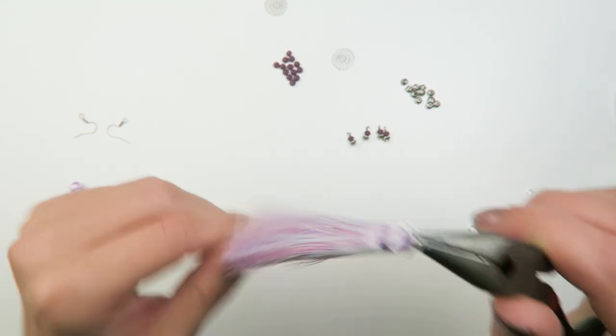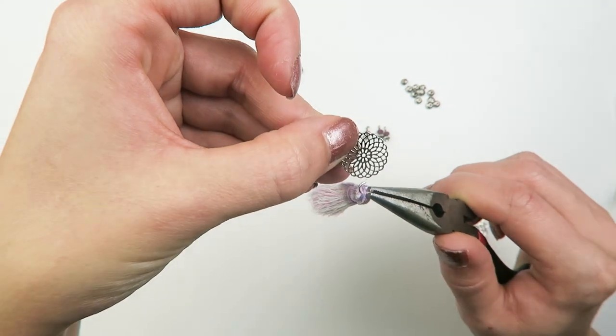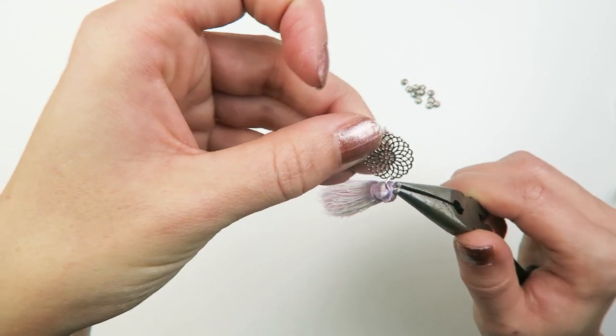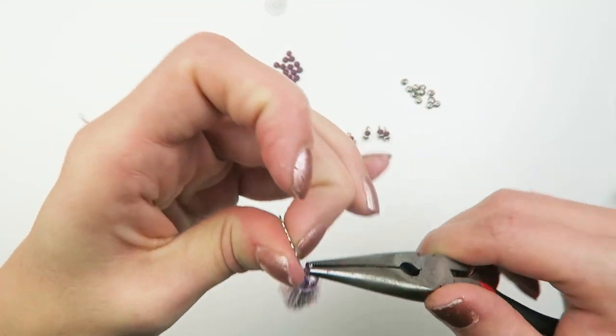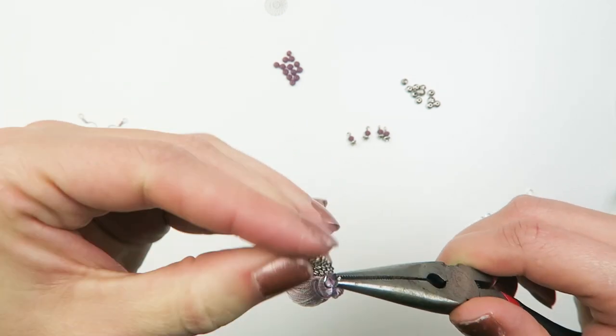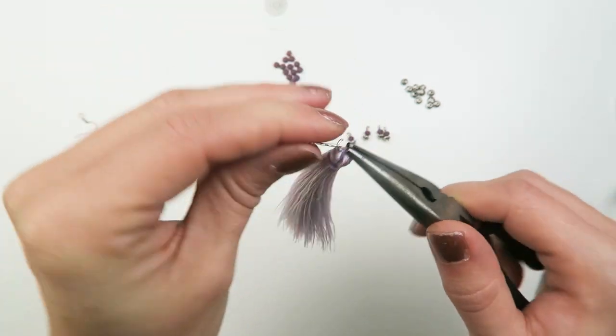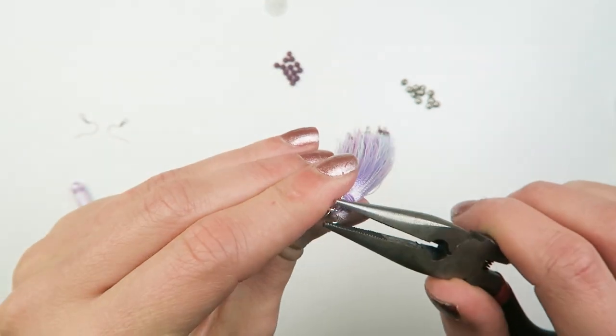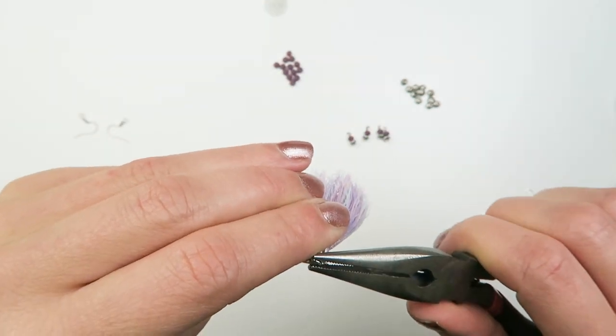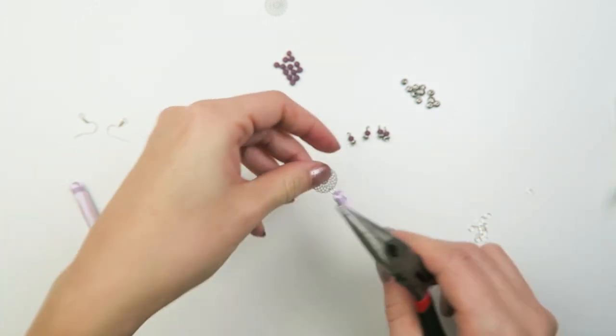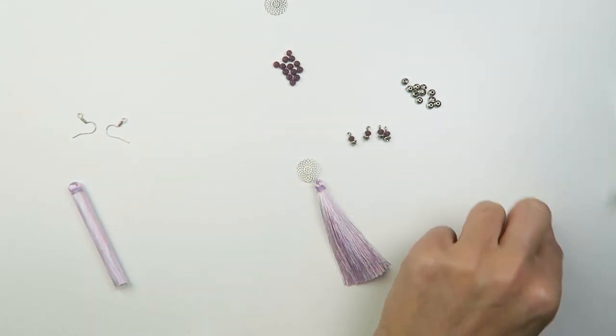Just do that carefully so you're not pulling out any threads. And now I can use my tassel in my earrings. So just make sure it's on the bottom of your Bohemian connector.